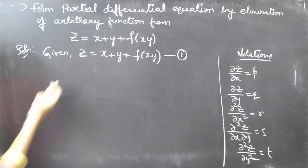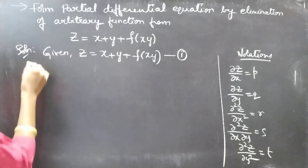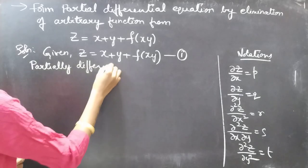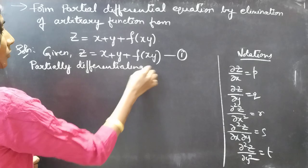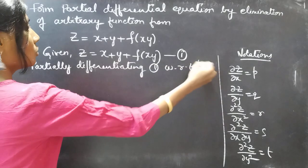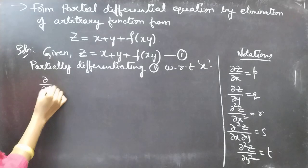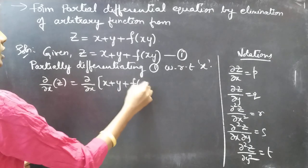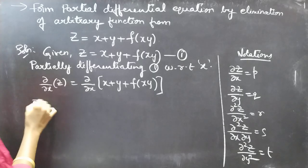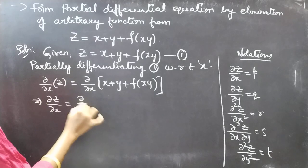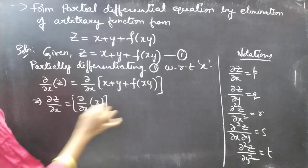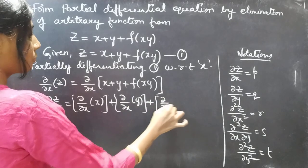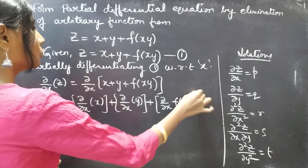Now let's partially differentiate equation 1 with respect to x and y. I'll begin with x — partially differentiating 1 with respect to x. I'll apply ∂/∂x on both sides of equation 1. This gives us ∂z/∂x equal to ∂/∂x of the first term of RHS plus ∂/∂x of the second term of RHS plus ∂/∂x of the third term of RHS.